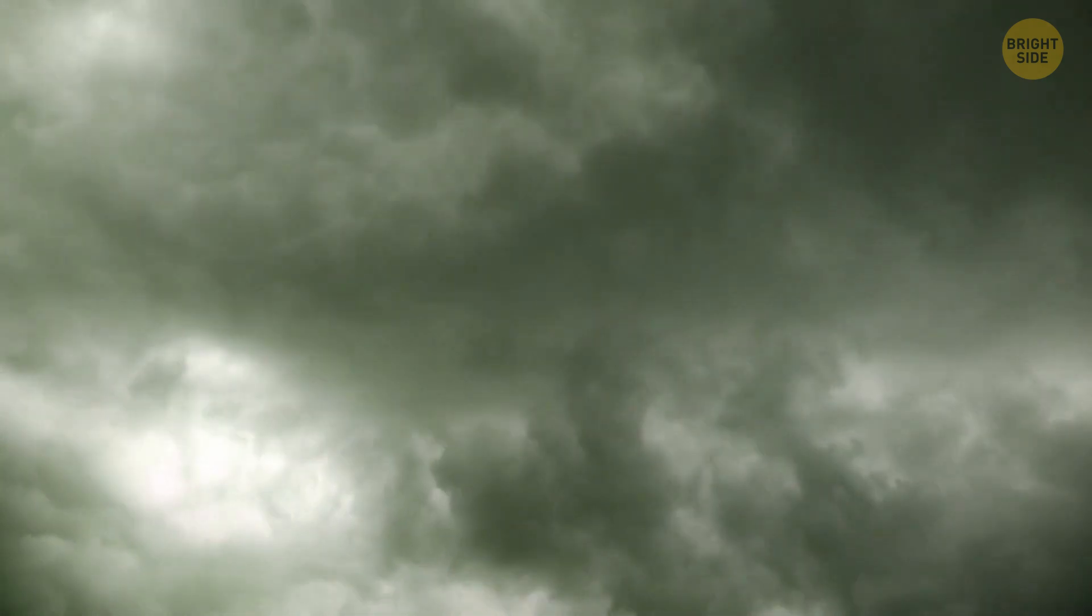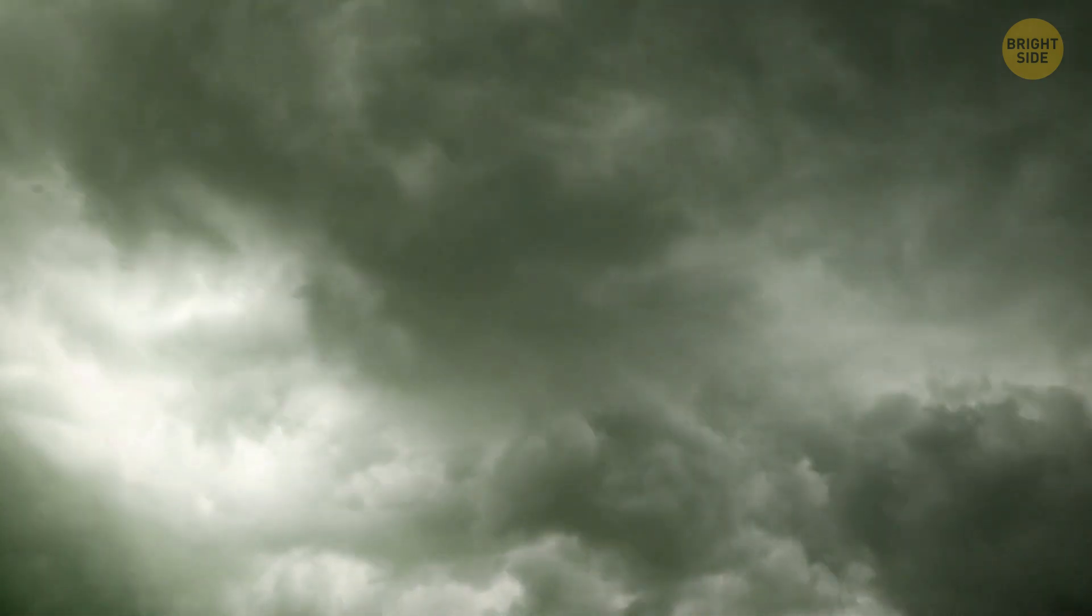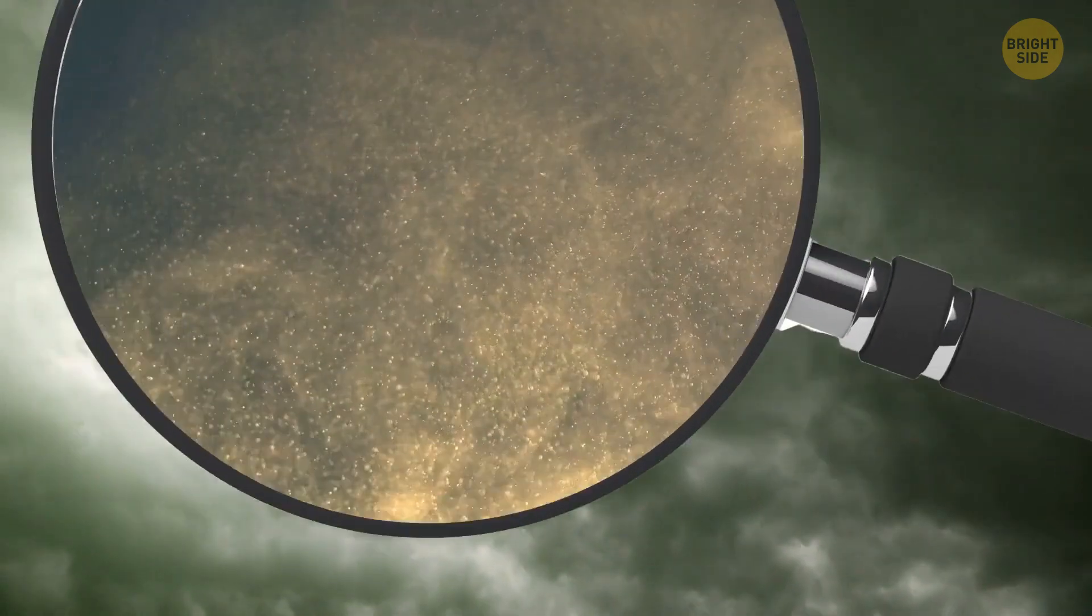The researchers think the sand clouds in the atmosphere form in a similar way to clouds on Earth. They just have droplets of sand instead of water. These sand droplets condense, fall, turn into silicate vapor in hot layers within the planet, and then rise again to form clouds once more.